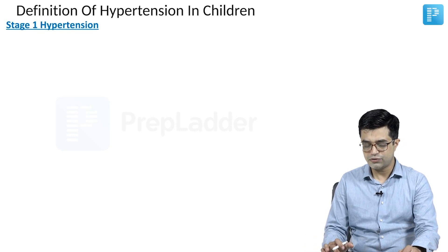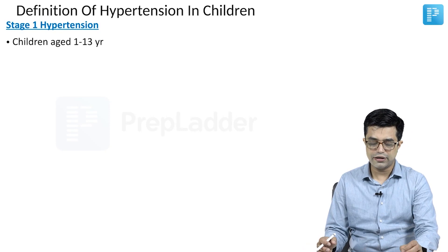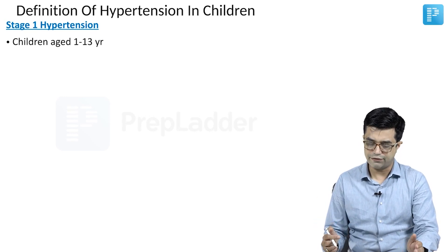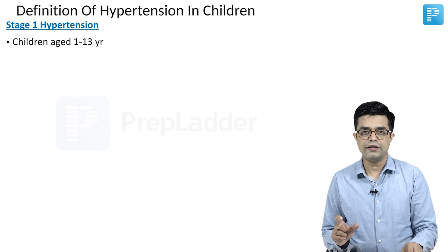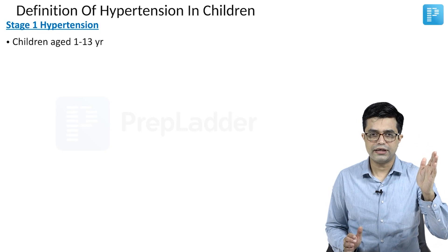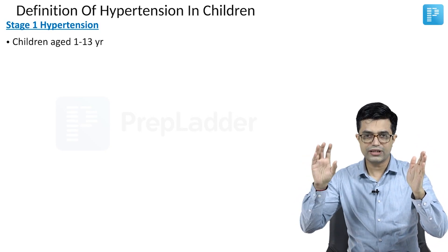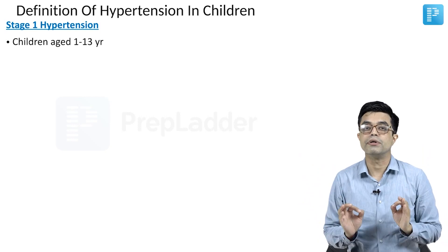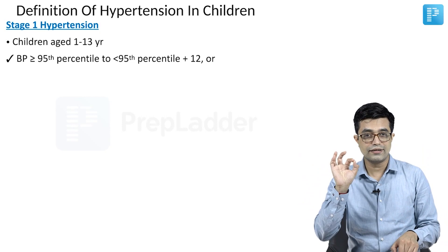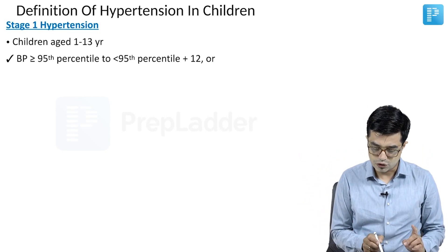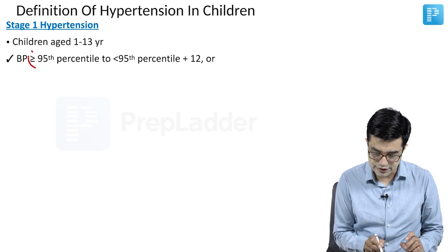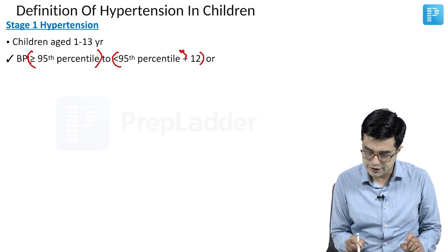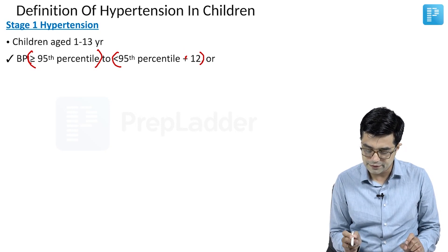Stage 1 hypertension — for children aged 1 to 13 years — is defined when the BP value lies between the 95th percentile (equal to or more than 95th percentile) and any value lower than 95th percentile plus 12. If the BP lies between these two values, we call it Stage 1 hypertension. This is the exact wording mentioned in the guidelines.